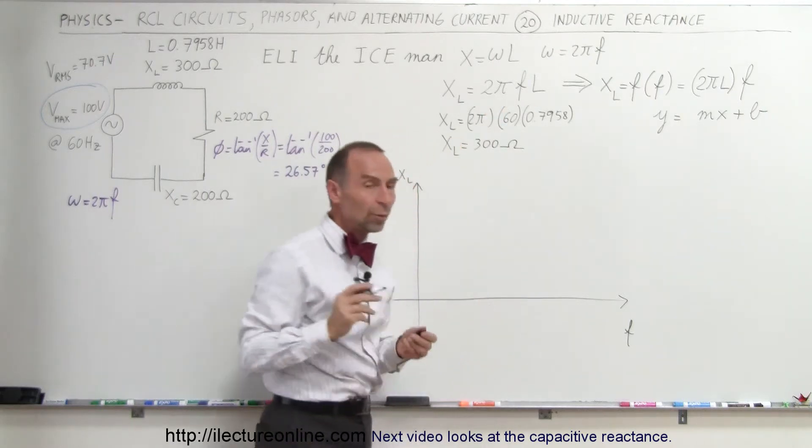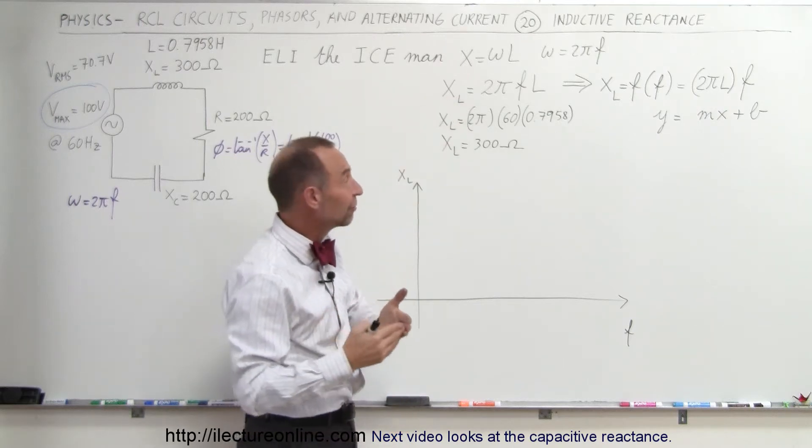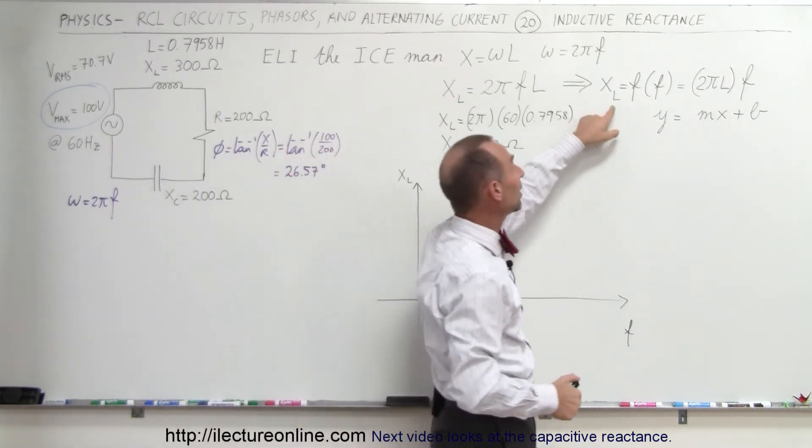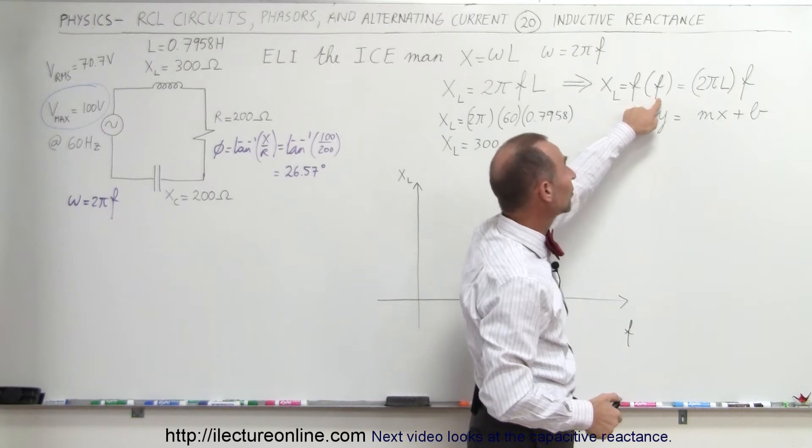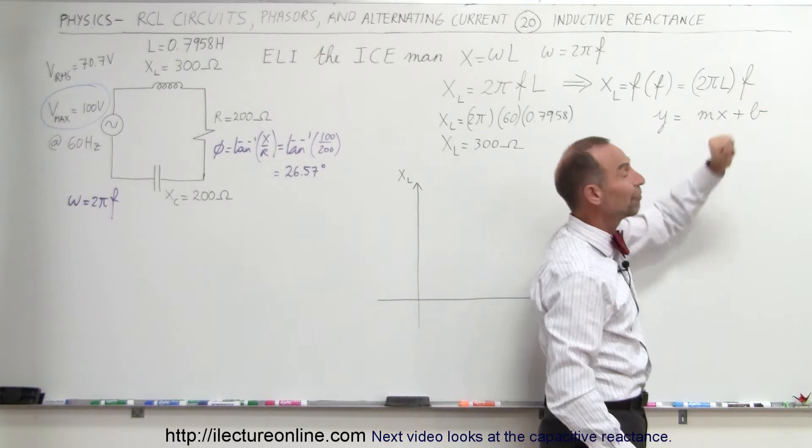If we take a look at that equation, we notice that the reactance of the inductor is actually a function of the frequency. So XL is equal to a function of the frequency of the oscillation of the source, right there, and so it's equal to 2πL times the frequency.